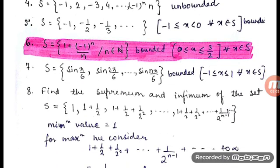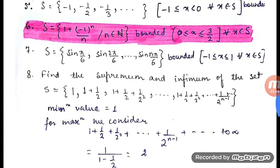The sixth is a very important question. The set is given by 1 + (-1)^n / n, where n belongs to the natural numbers. If we put n = 1, we get 0. If we put n = 2, we get 3/2. Moving further, all elements lie between 0 and 3/2. So it is bounded by 0 and 3/2.